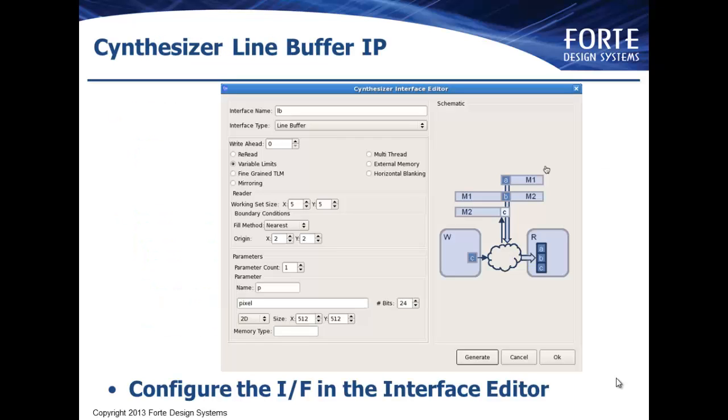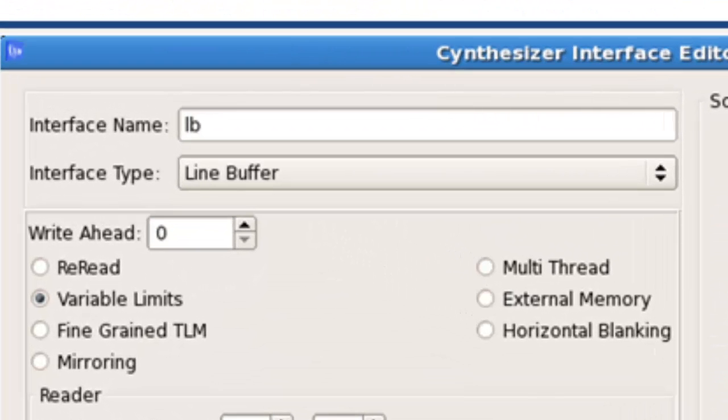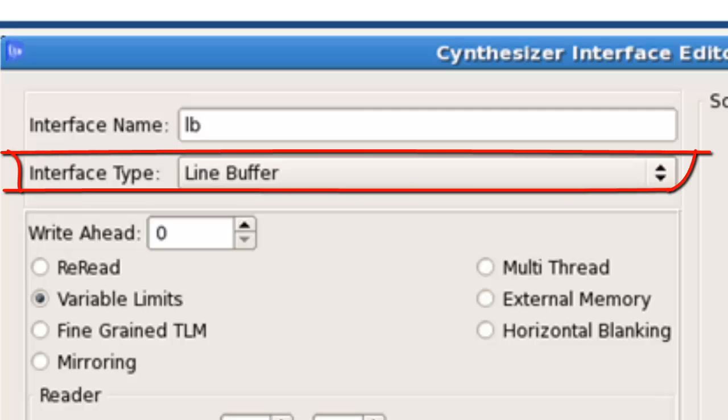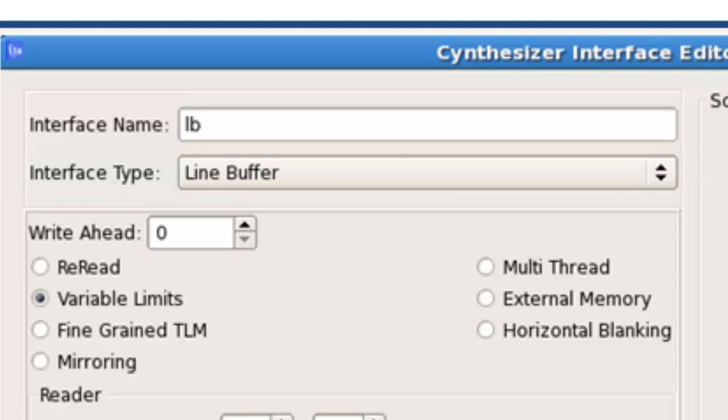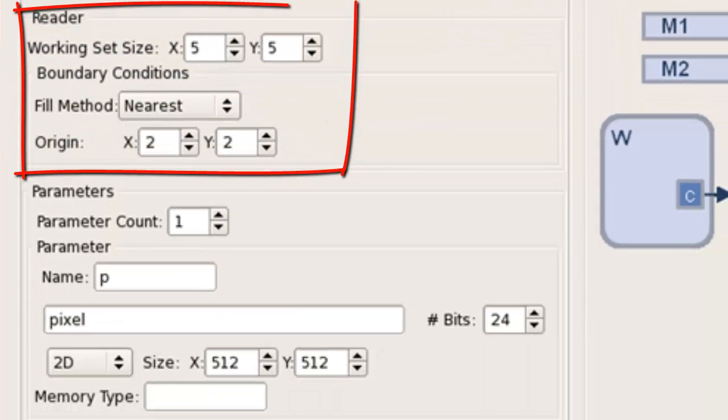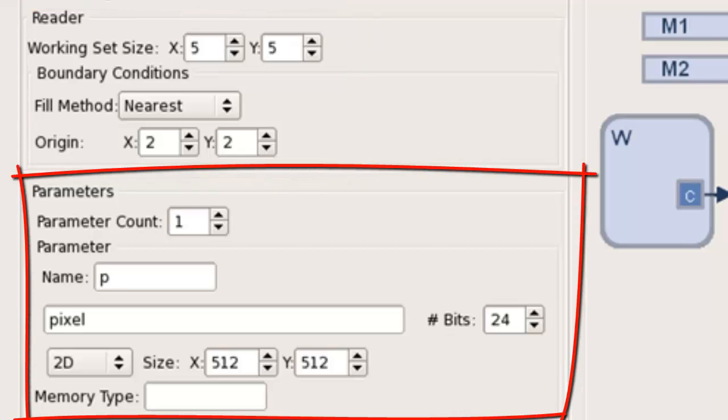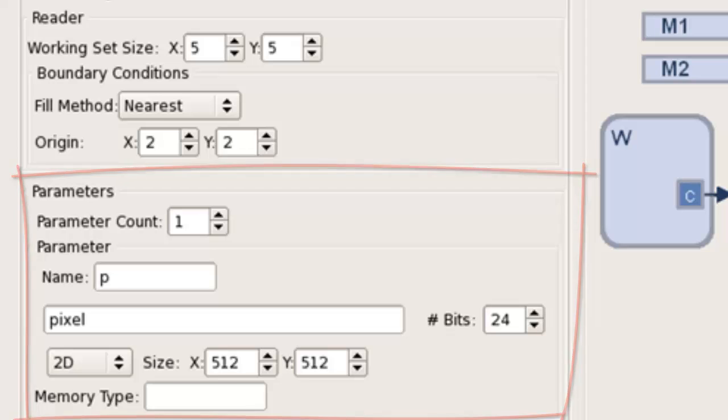Let's move on to the more concrete aspects of the implementation with Synthesizer. Here we see a window from the Synthesizer GUI that allows us to configure a line buffer for our needs. Since this window is a generic configuration window for many different kinds of interfaces, the first thing we need to do is select the kind of interface we want. In our case, it's line buffer. Now there are a couple of things we need to define for our line buffer. A definition of how the line buffer will be read and a definition of the characteristics of the entire image to be processed.